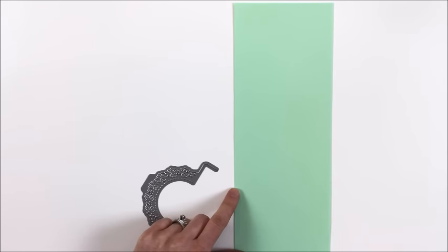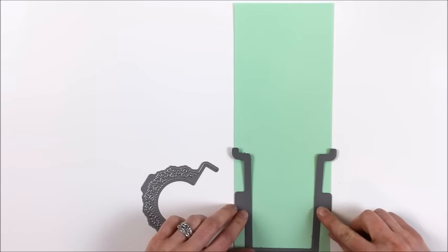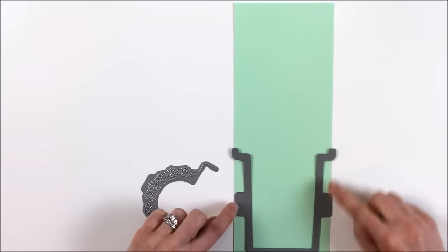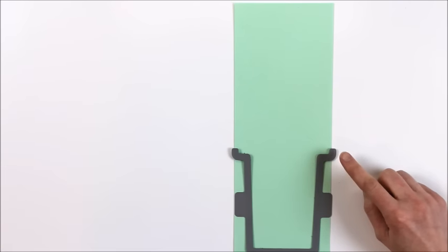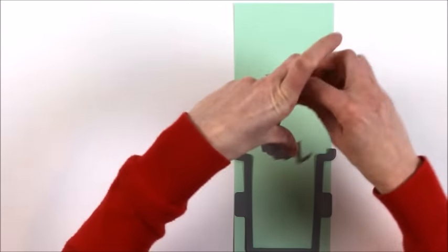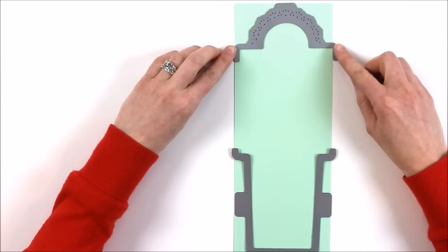Just like our envelope die, you're going to take the long part of the envelope die and you're going to line that up using these tabs and the little notches so it's really easy. But on the other end you're going to use the new Lacy Love Note add-on. So it lines up the same way as the rest of the die did.